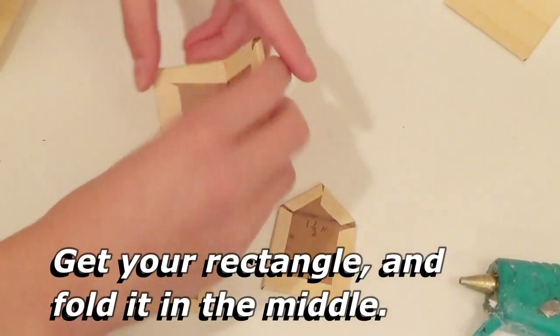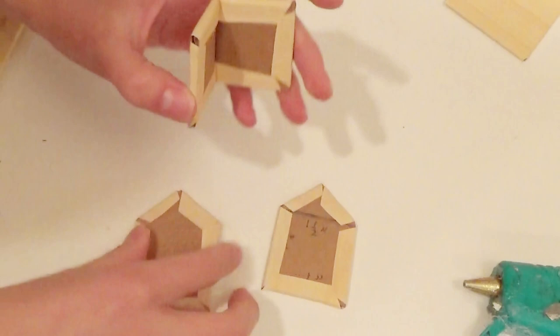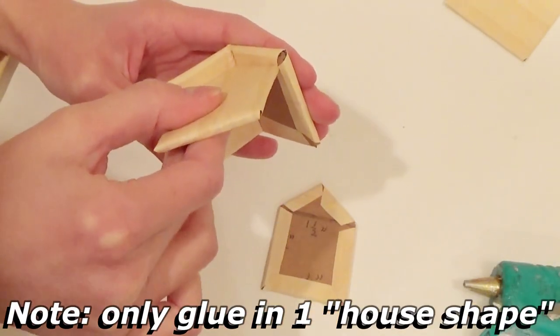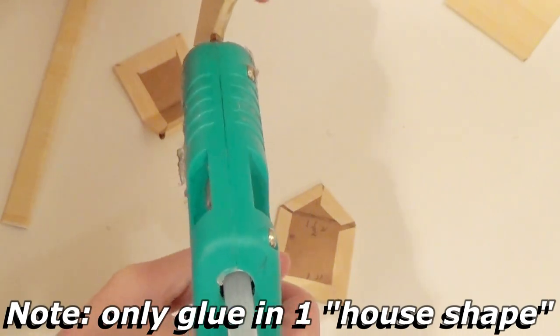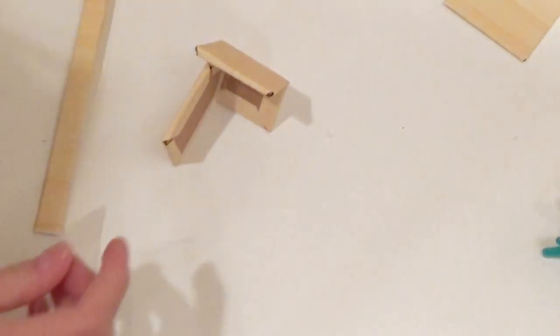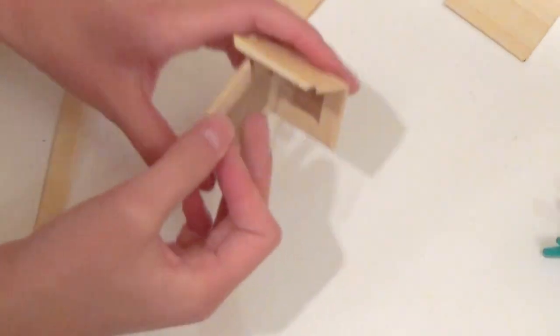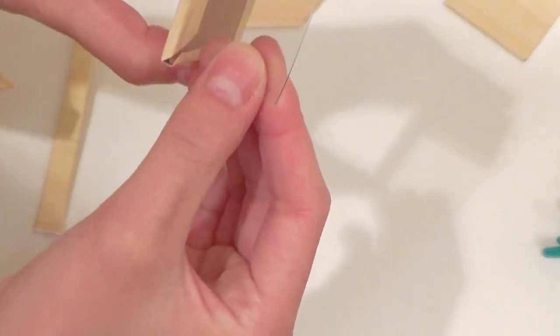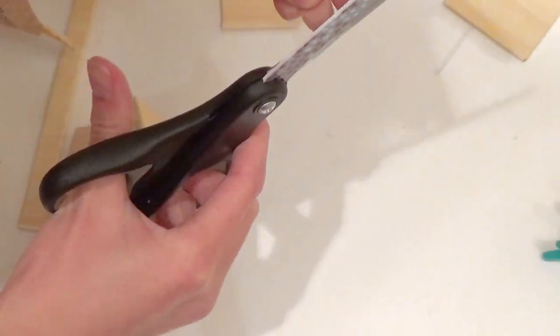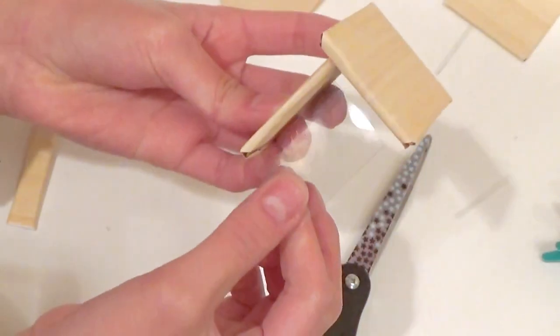Grab your little pieces that look like houses and glue them in here. Before you glue on the other side, you want to glue in your clear plastic onto the side right here. We're going to glue our clear plastic on like that.